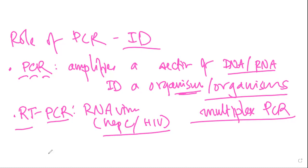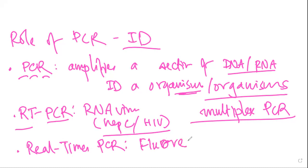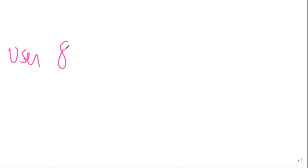Real-time PCR is a procedure where we use a fluorescence dye for real-time DNA level quantification. The fluorescent dye enables real-time detection of the amplified DNA. That is real-time PCR. Now let's look at the uses of PCR.